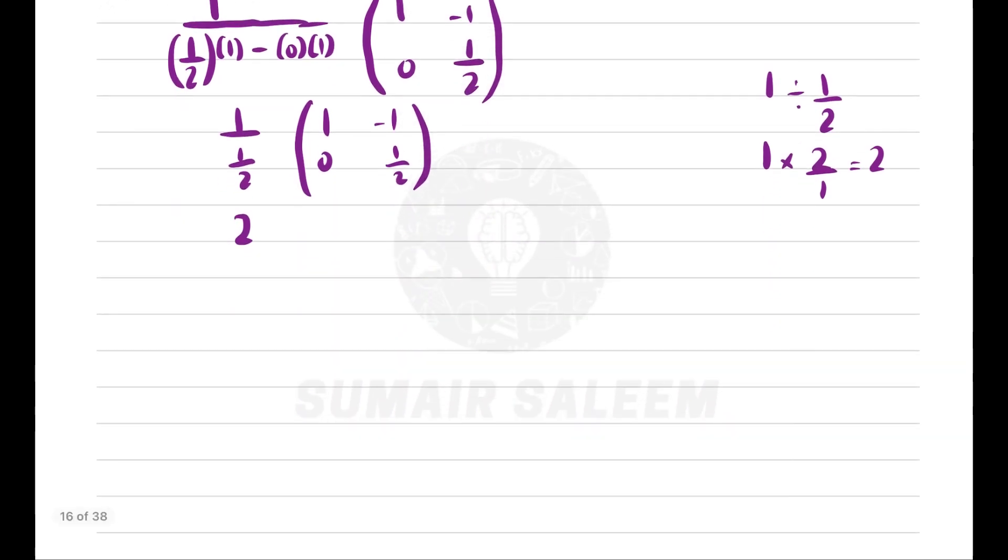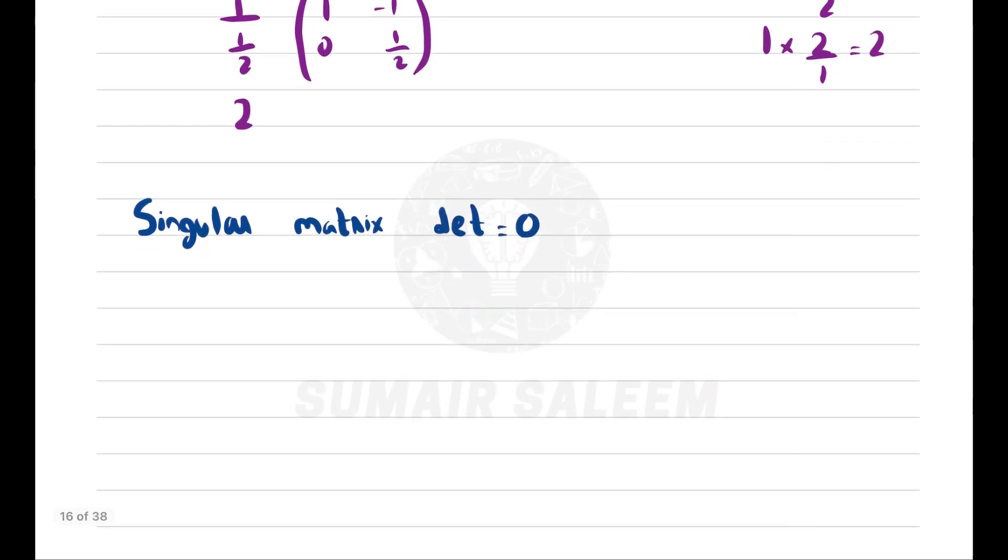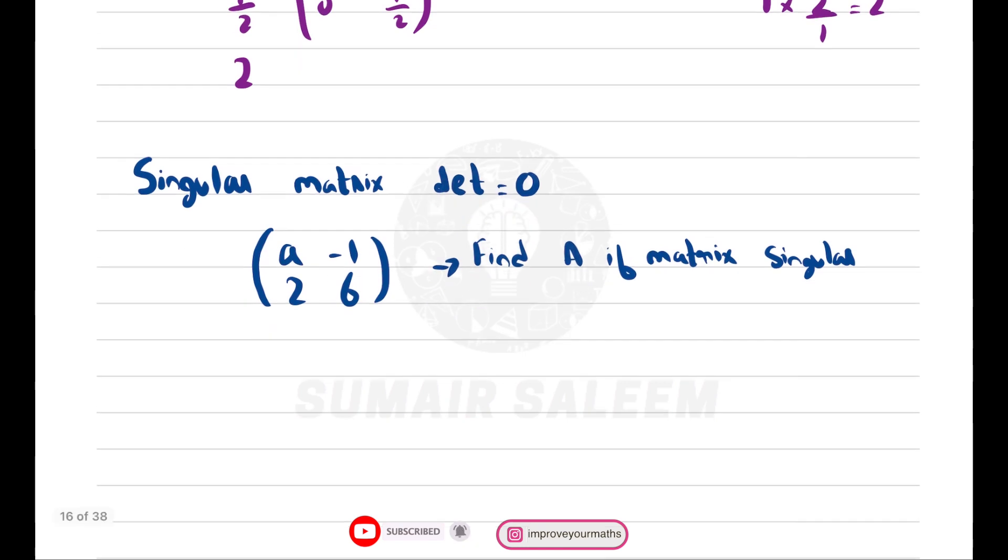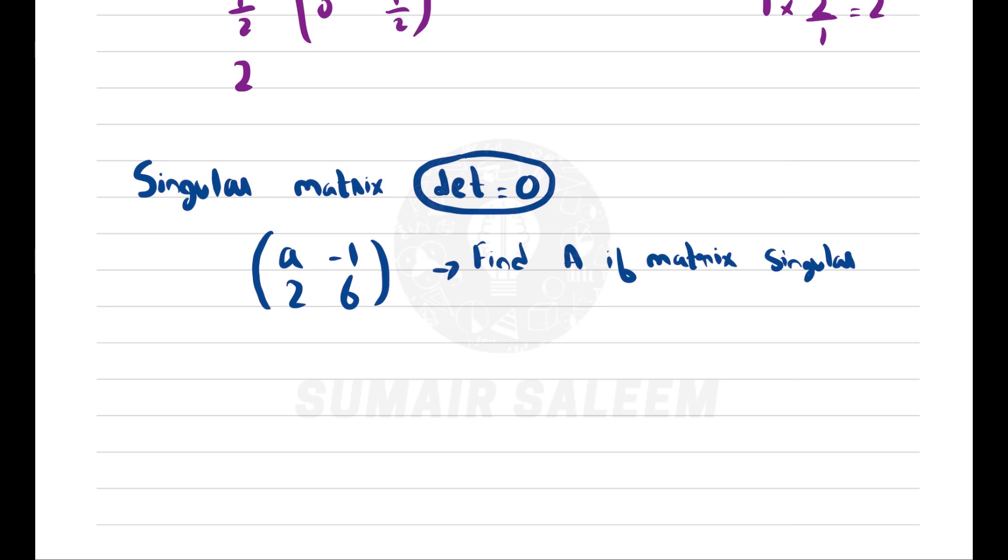One point I'll add here: singular matrix. A singular matrix has determinant equal to zero. The examiner might give you a question saying find a if the matrix is singular. Just know that singular matrix means determinant equals zero. Let's apply the determinant formula: AD minus BC equals 0.